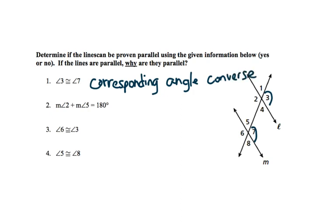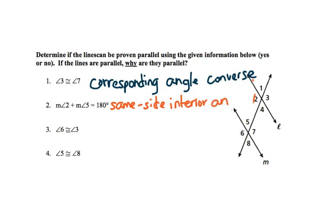Angles 2 and 5 do touch lines L and M. They are supplementary, so this is same side interior. We're going to write: same side interior angle converse, because we're always going to use the converse of these relationships to prove parallel lines.